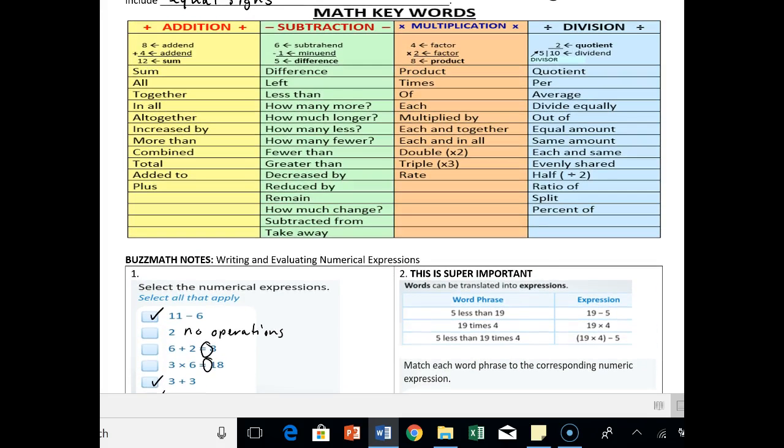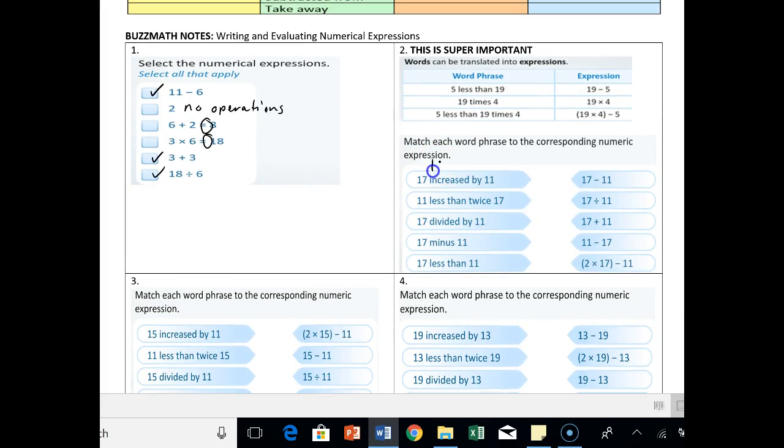It says 17 increased by 11. So increased by, if you go to your word chart, should mean... decreased by is subtraction. So increased by is addition. So basically what we're just saying is 17 plus 11. And so we match that one up with this third one right here.